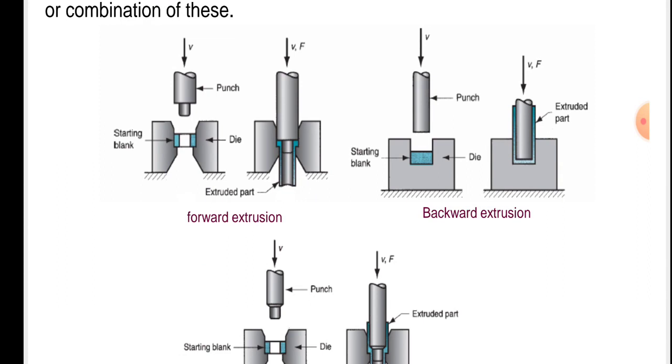Forward extrusion is shown in the figure. V is the velocity of the punch. There are two dies, left and right, with the workpiece in between. Then the next figure shows the punch applied on the workpiece and the extruded part is produced.